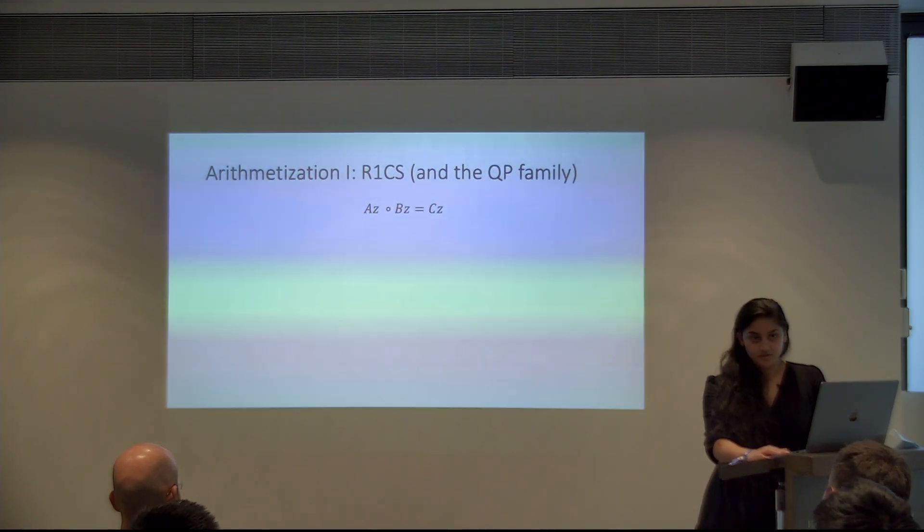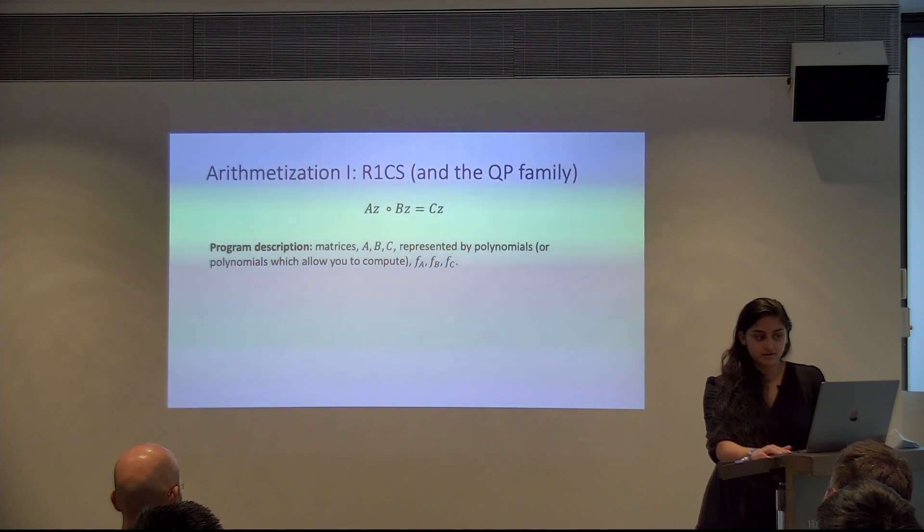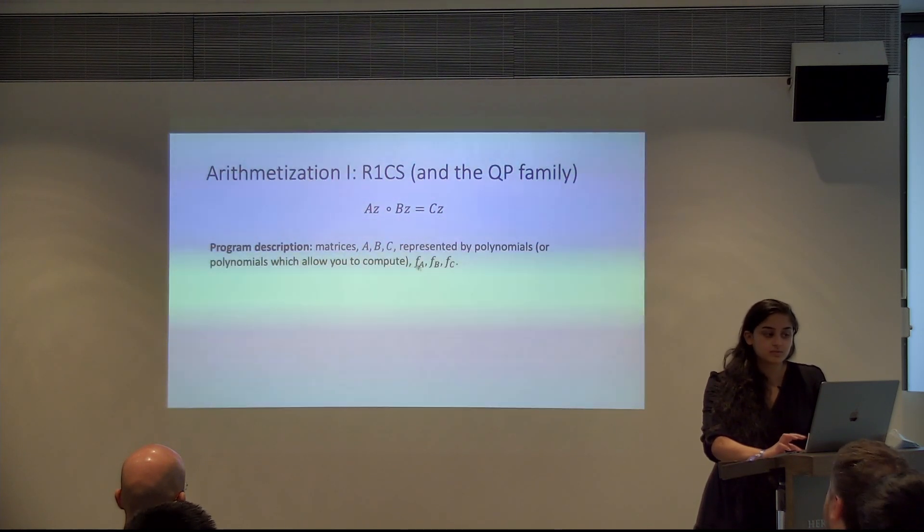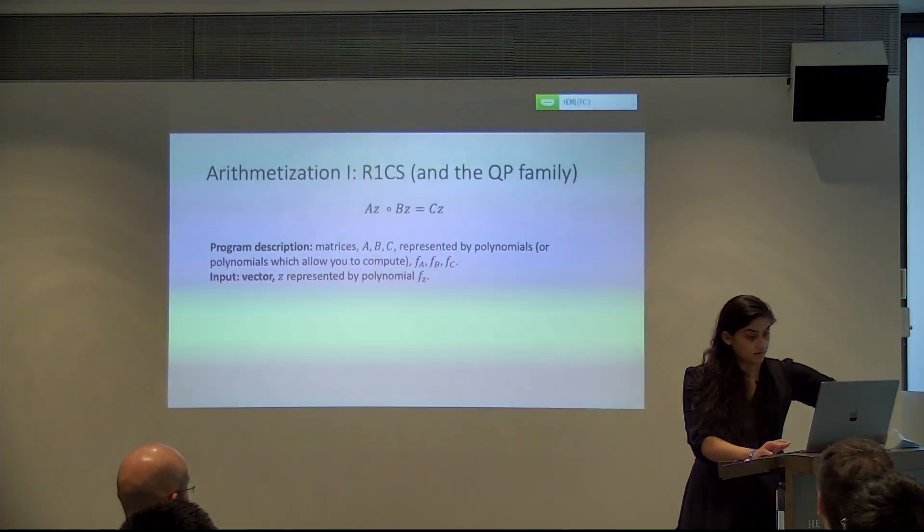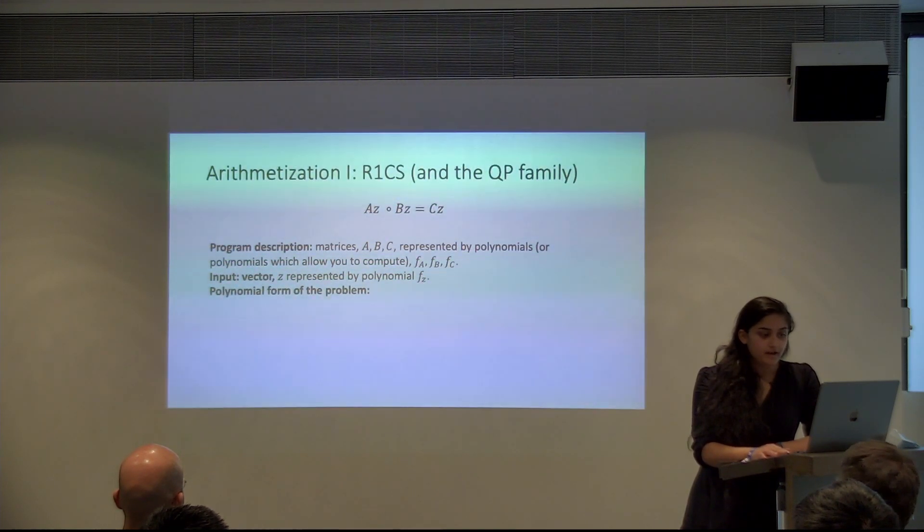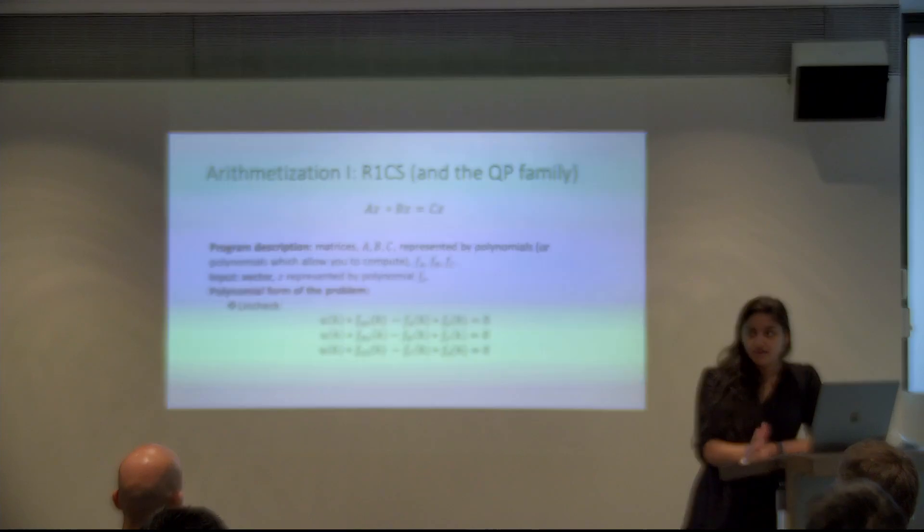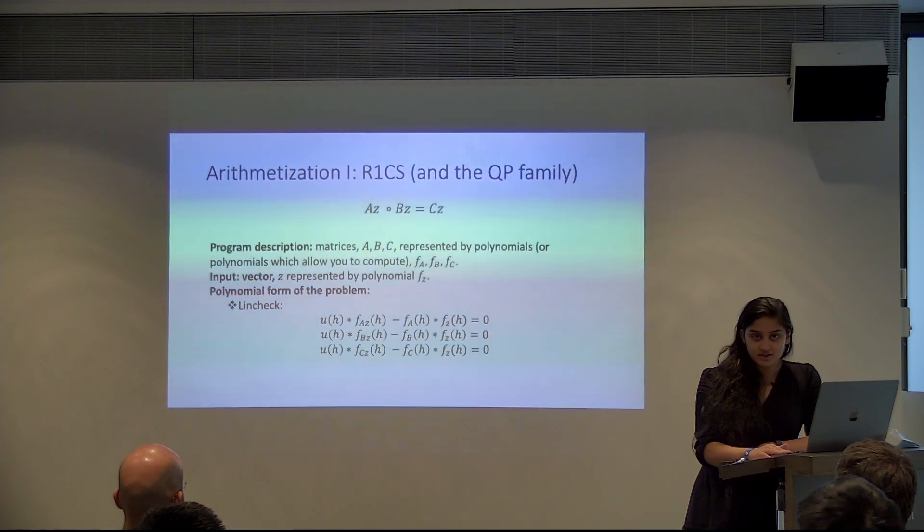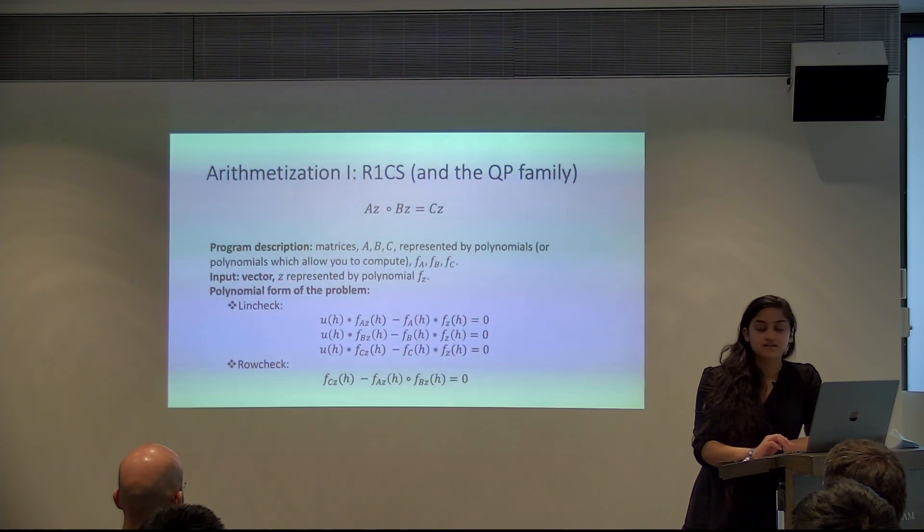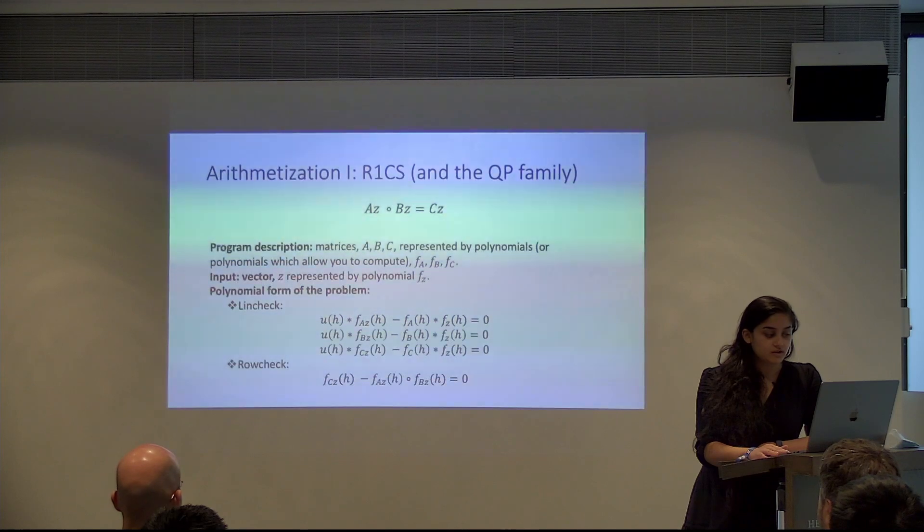And there's an input vector Z that the prover provides. And in a sense, the A, B and C matrices represent the program description. And they're sometimes represented by some collection of polynomials, which can eventually be able to use to compute some polynomials, FA, B, and C. And there's an input vector Z represented by a polynomial FZ. And overall there's two polynomial problems you end up with. One of them is called LINCHECK, which is basically checking that you computed the product with the matrix correctly. And the other one is row check, which is then checking the actual AZ element wise product BZ is equal to CZ.